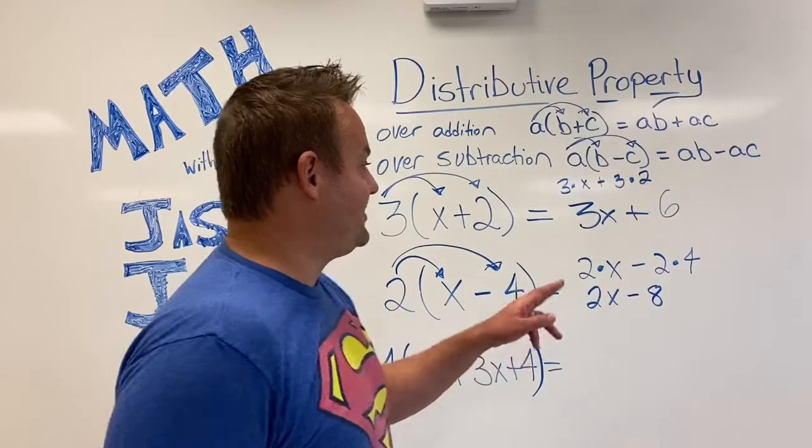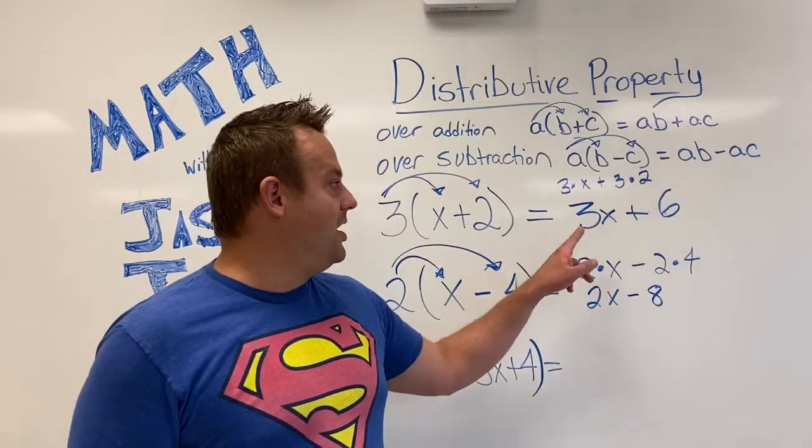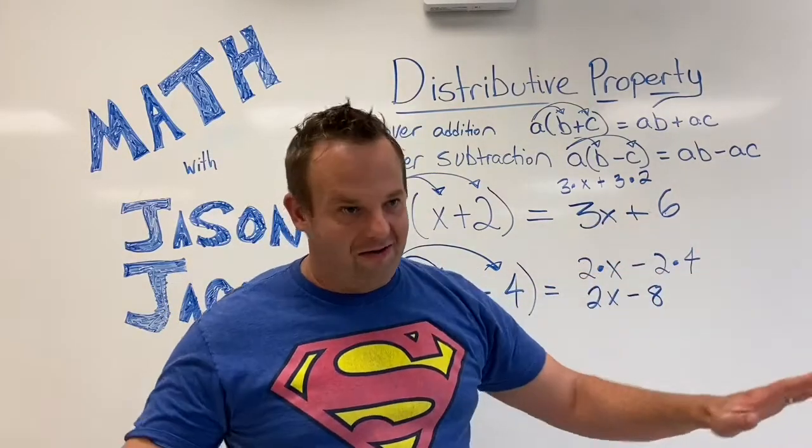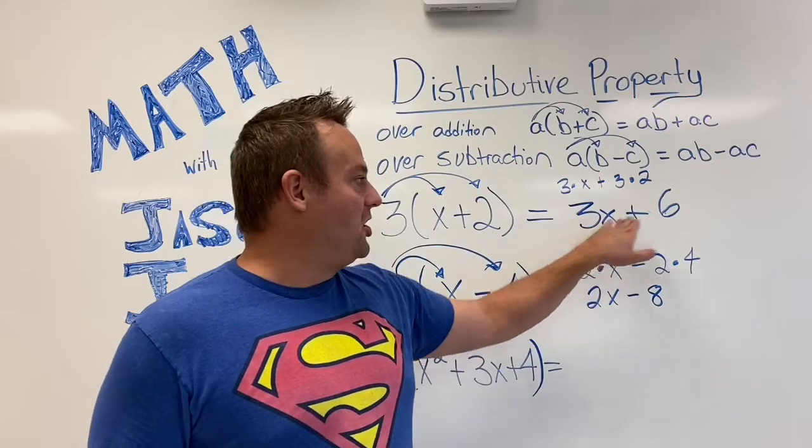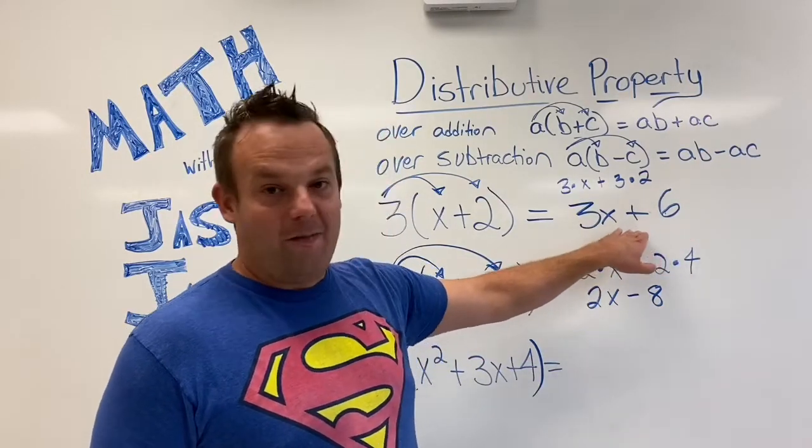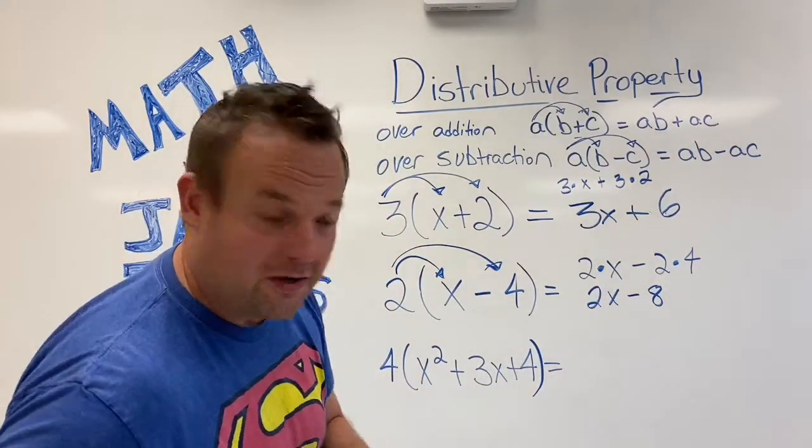Oh, common mistake that some people do is they'll say, like, for example, in this one, 3X plus 6 is 9X. Wrong, wrong. These are unlike terms. If I were to model this out, I'm actually going to show you how to model this one out in just a second, and I'll explain like and unlike terms, guys.